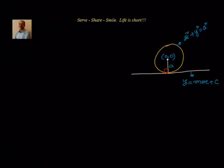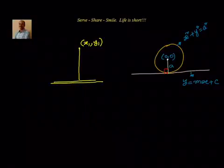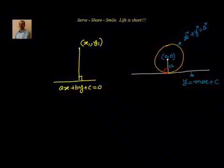Now what is the condition that needs to be satisfied? We know that the perpendicular distance between a point and a line. Let us say the point is x1 comma y1 and its distance from a line ax plus by plus c equal to 0.